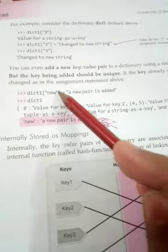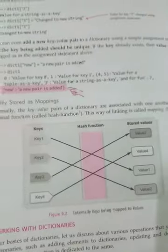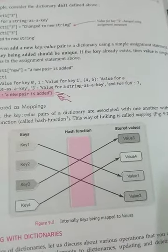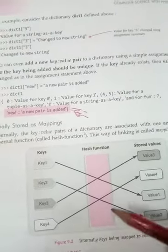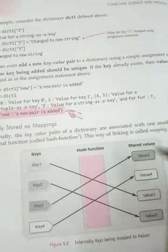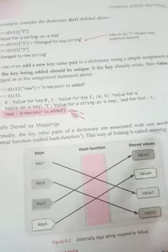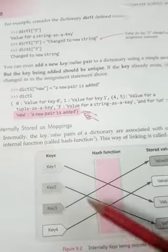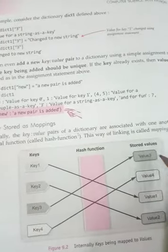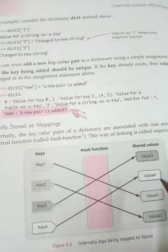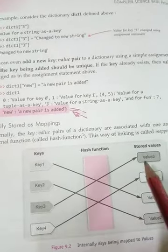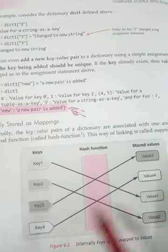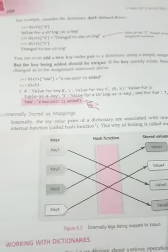The next characteristic is that a dictionary is internally stored as a mapping. The key-value pairs of a dictionary are associated with one another using an internal function called a hash function. Through this hash function, keys and values are linked to each other — this way of linking is called mapping. In memory, different keys and values are stored and they may not be in a proper sequence, but there is always a link so we can easily access any value through its key.